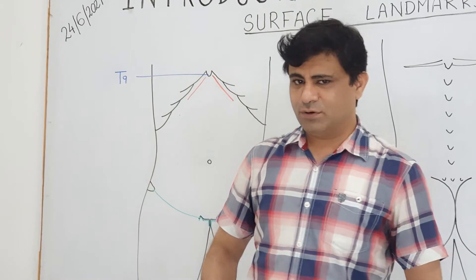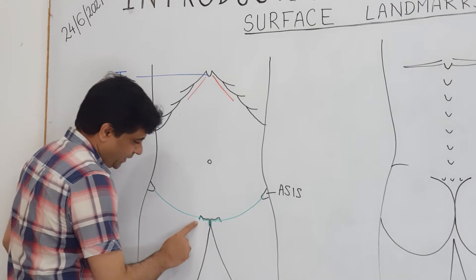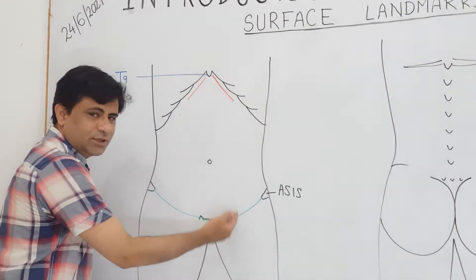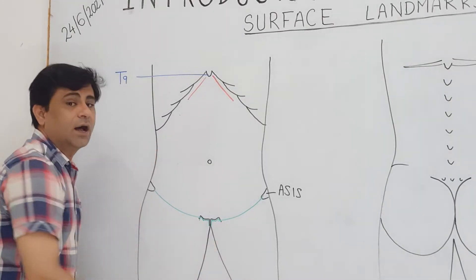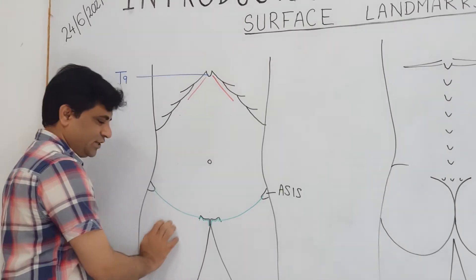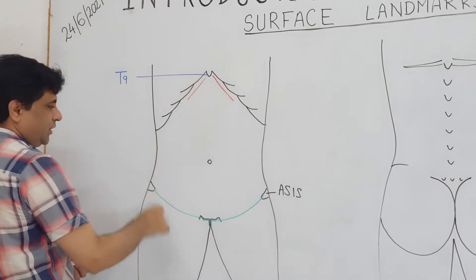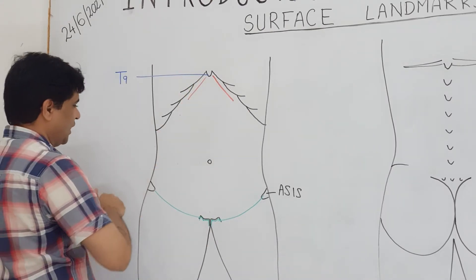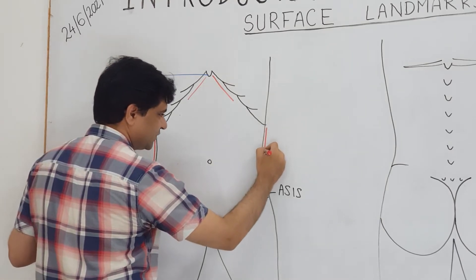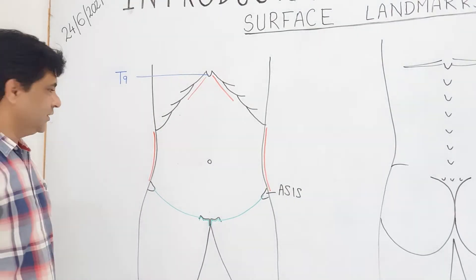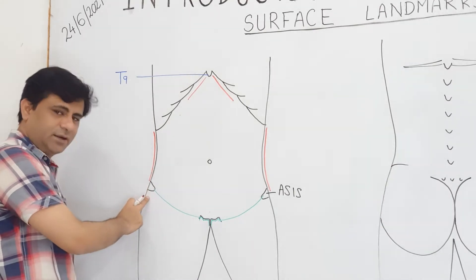The inguinal ligament is a modification of the aponeurosis of the external oblique. This is the inguinal region, and it has a convexity downwards because of the pull by the fascia lata - the thick fascia in the front of the thigh. The flanks are bounded by these margins, and the extent of the flank is between the tenth rib and the iliac crest laterally.